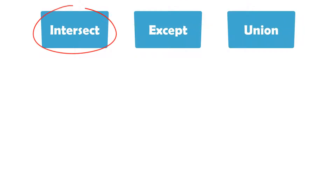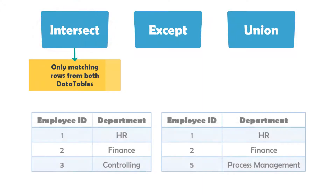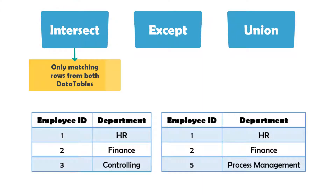Intersect — with this function you get the matching rows from both tables. For example, we have two tables, each consisting of two columns. The first two rows are exactly the same. With this function we will get a table which only contains those first two rows.